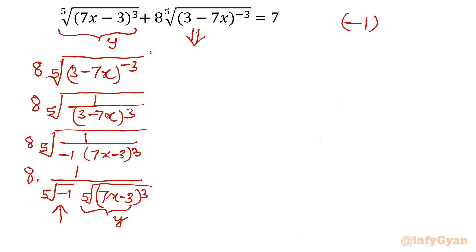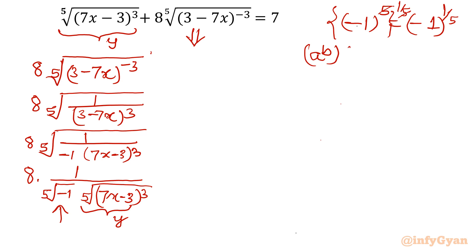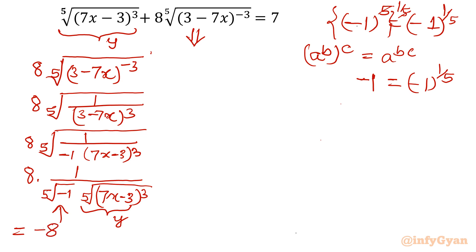For the first factor, consider minus 1 raised to the power 5 equals minus 1. Raising both sides to the power 1/5 and applying the exponent property a^(b/c), we get the 5th root of minus 1 equals minus 1 raised to the power 1/5, which equals minus 1. So the overall second term evaluates to minus 8 over y.